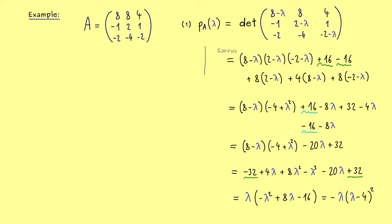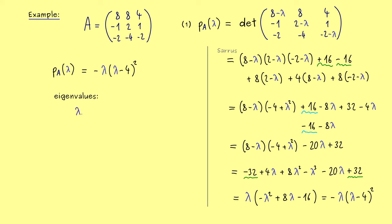Let's write down the eigenvalues. The first eigenvalue is lambda_1 equals 0, and we see the algebraic multiplicity is equal to 1. The second eigenvalue is lambda_2 equals 4, and for this case the algebraic multiplicity is 2. With this result we can go to step two and calculate the eigenspaces.